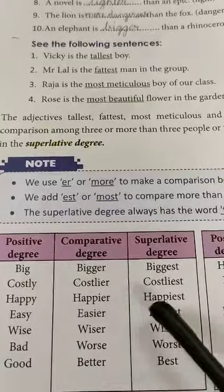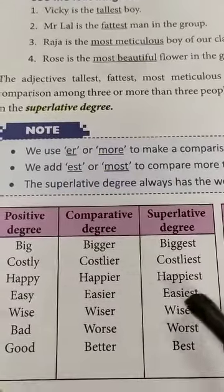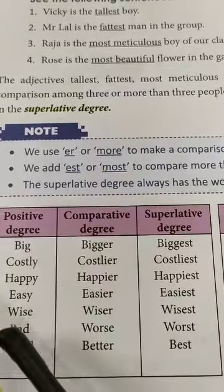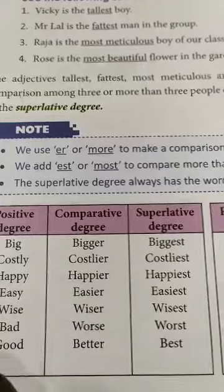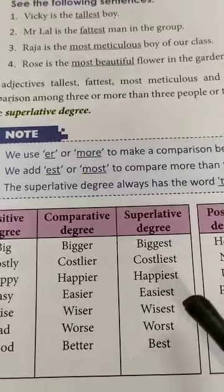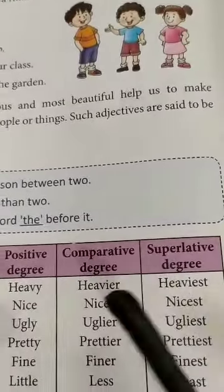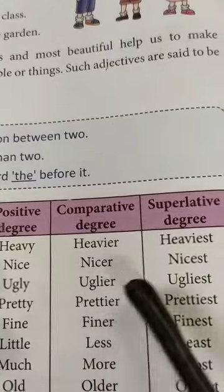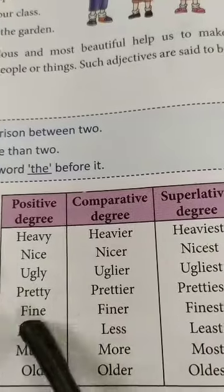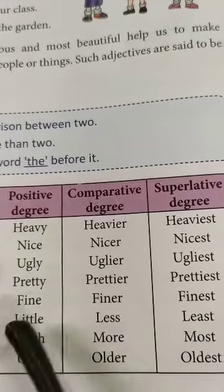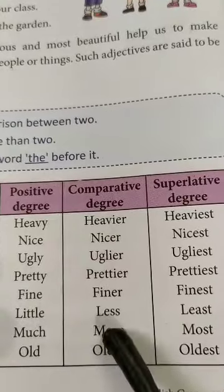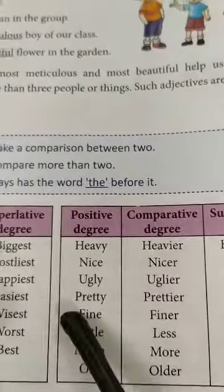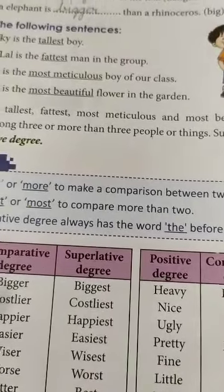Continuing the table: Heavy → heavier → heaviest. Nice → nicer → nicest. Ugly → uglier → ugliest. Pretty → prettier → prettiest. Fine → finer → finest. Little → less → least. Much → more → most. Old → older → oldest. Read these and learn them. Okay children, bye.